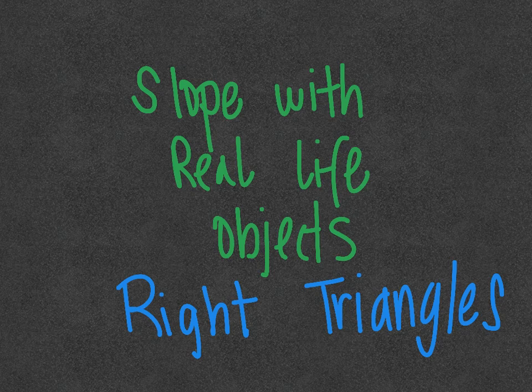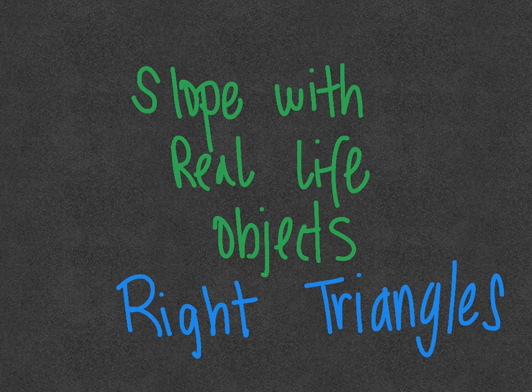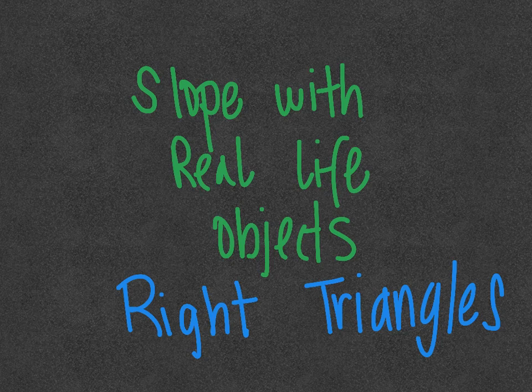Okay, this video is going to take triangles or objects that are in real life that can be connected to form a right triangle, and we're going to use our thinking from finding slope on a coordinate graph to also help us find that in real life objects.